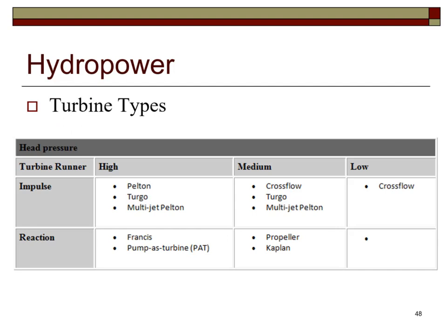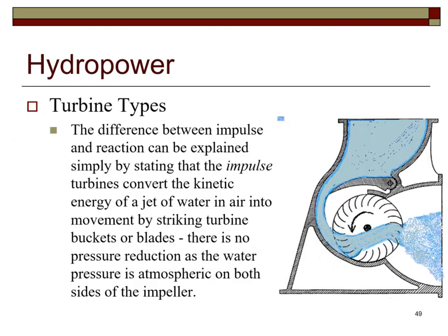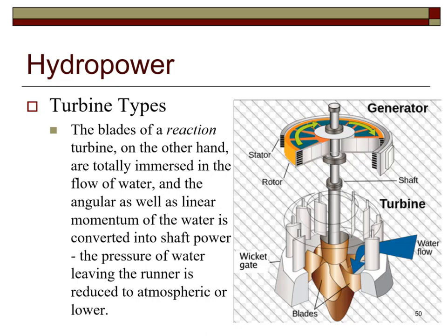The types of turbine and whether they operate on high, medium, or low pressure are presented in tabular form. Simply stated, an impulse turbine converts the kinetic energy of a jet of water in air into movement by striking turbine blades, with no pressure reduction since water pressure is atmospheric on both sides of the impeller. The blades of a reaction turbine are totally immersed in the flow, and both angular and linear momentum of the water are converted into shaft power, with the pressure leaving the runner reduced to atmospheric or lower.